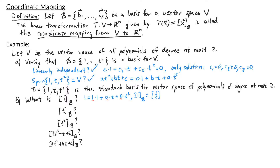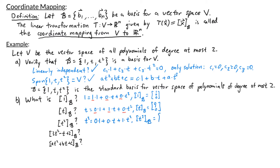Next, the b-coordinate vector for t. I can write t = 0·(1) + 1·t + 0·t². The weights are 0, 1, 0, so the b-coordinate vector for t is [0, 1, 0]. Then the b-coordinate vector for t²: t² = 0·(1) + 0·t + 1·t². So the b-coordinate vector for t² is [0, 0, 1].